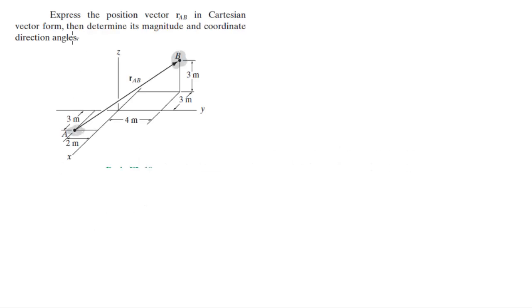Alright guys, now we're going to do this problem that says express the position vector r_AB in Cartesian vector form, then find its magnitude and coordinate direction angles.